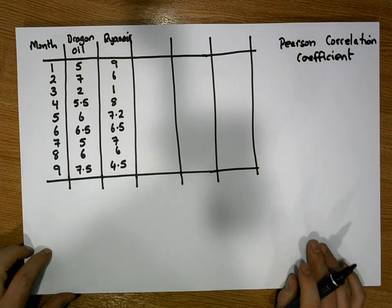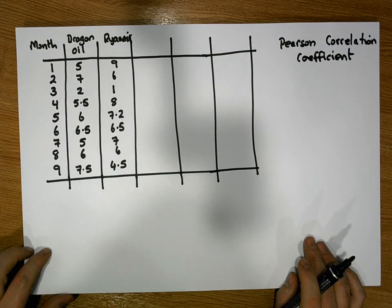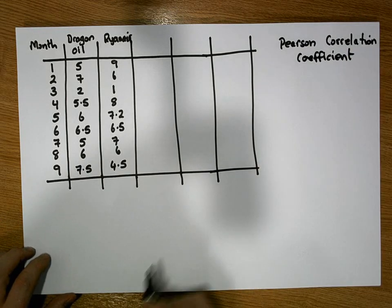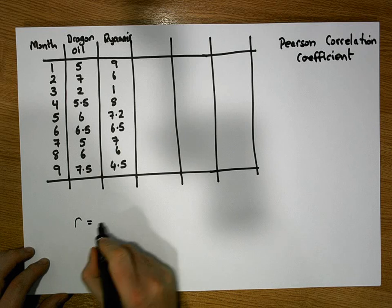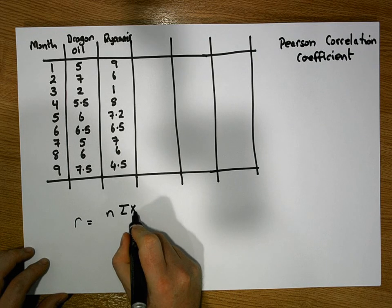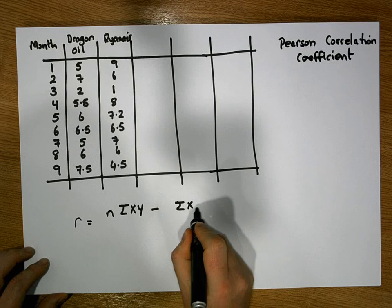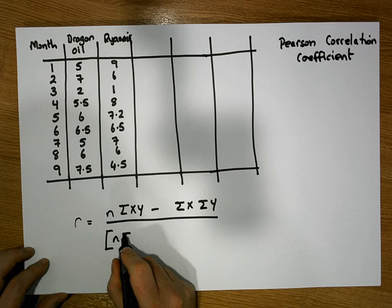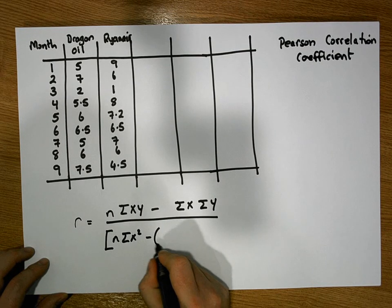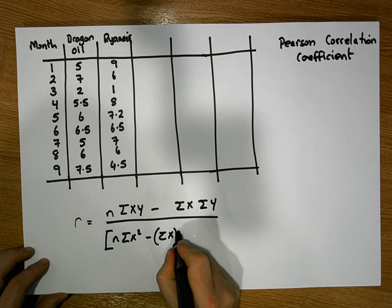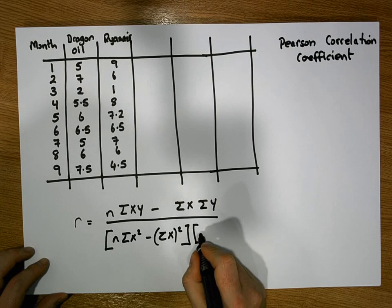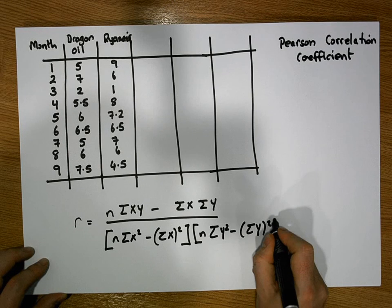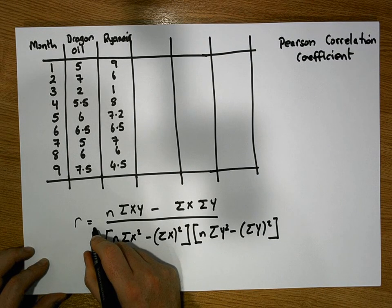To calculate the Pearson Correlation Coefficient we have a formula that will guide us through the steps. The formula is: r is equal to n times the sum of the xy's, minus the sum of the x's times the sum of the y's, divided by the square root of n times the sum of the x squareds minus the sum of the x's all squared, times n times the sum of the y squareds minus the sum of the y's all squared.